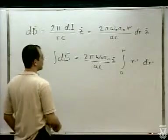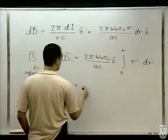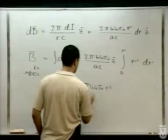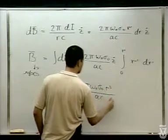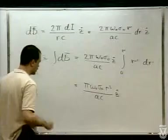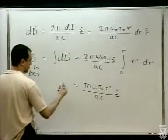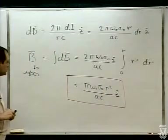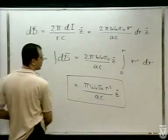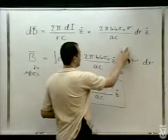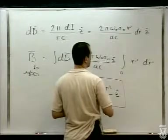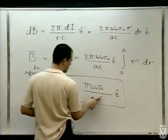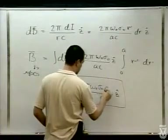האינטגרל נותן A²/2; השתיים מצטמצמת עם ה-2, ונקבל: π אומגה-אפס סיגמה-אפס A² / (AC) בכיוון Z. סליחה — הגבול העליון הוא A, ומכאן מקבלים A. זה השדה במרכז.